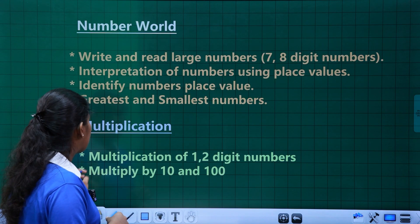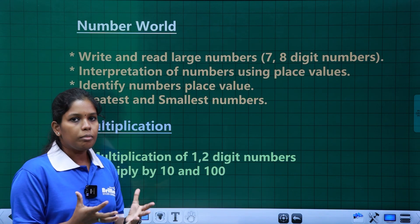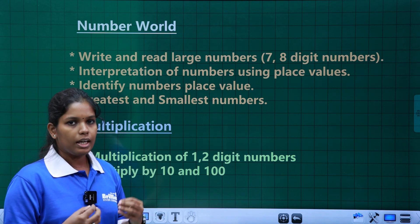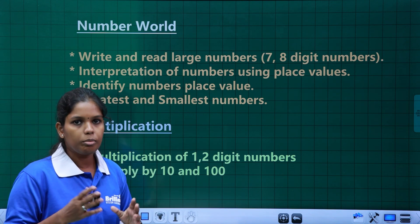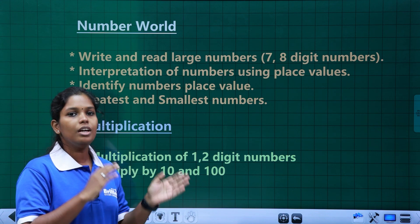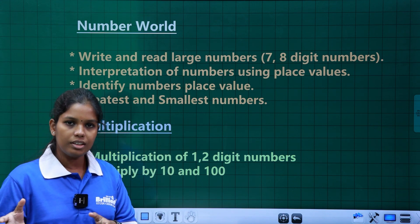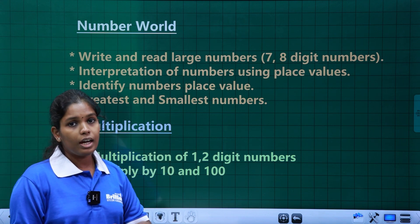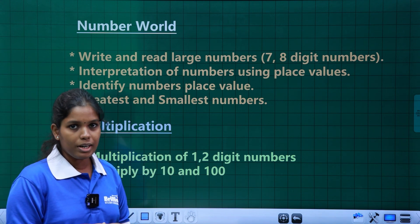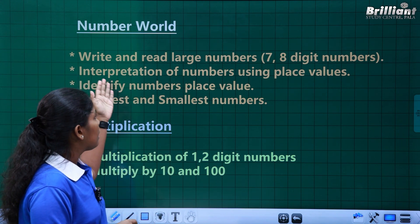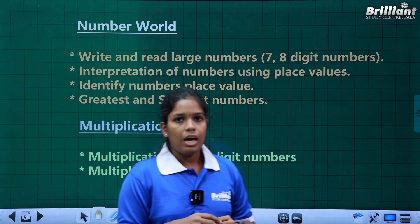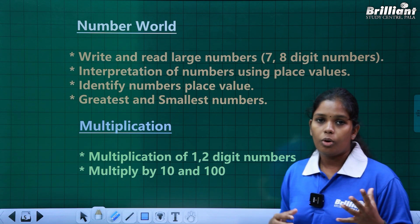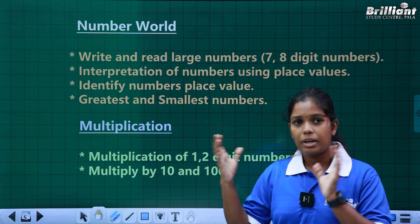The next topic is Number World. We are learning small numbers: natural numbers, whole numbers. There are single digit numbers, two digit numbers, three digit numbers. There are greatest numbers and smallest numbers. There are large numbers — one lakh, ten lakh, one crore, ten crore. There are many place values.